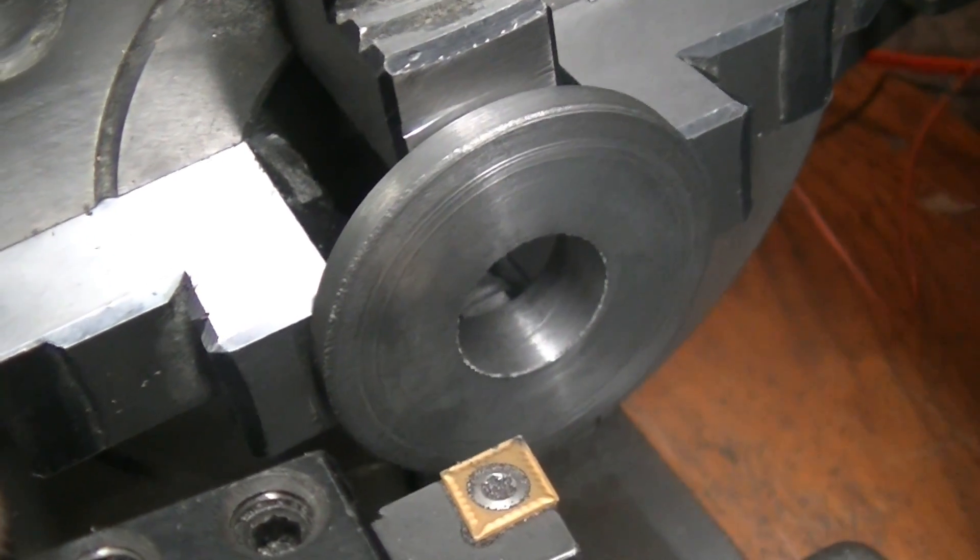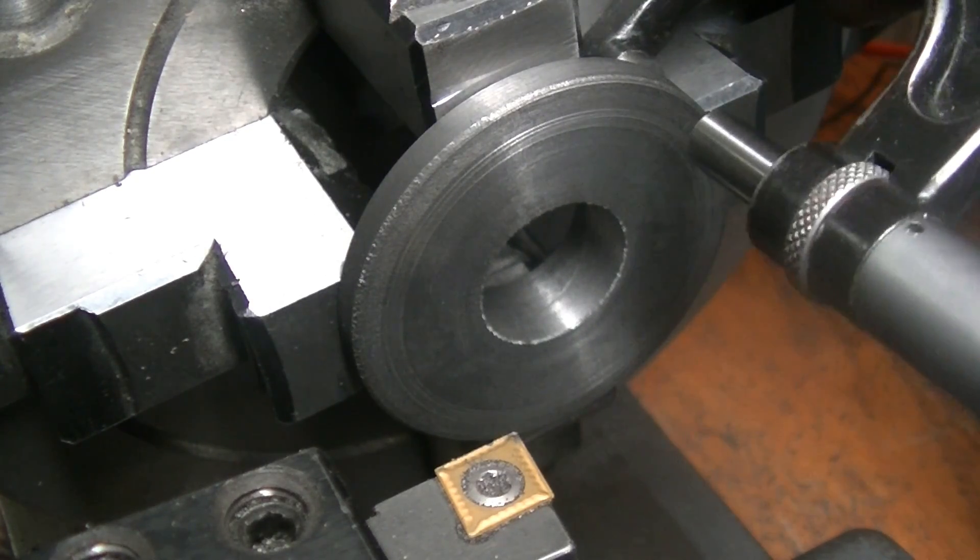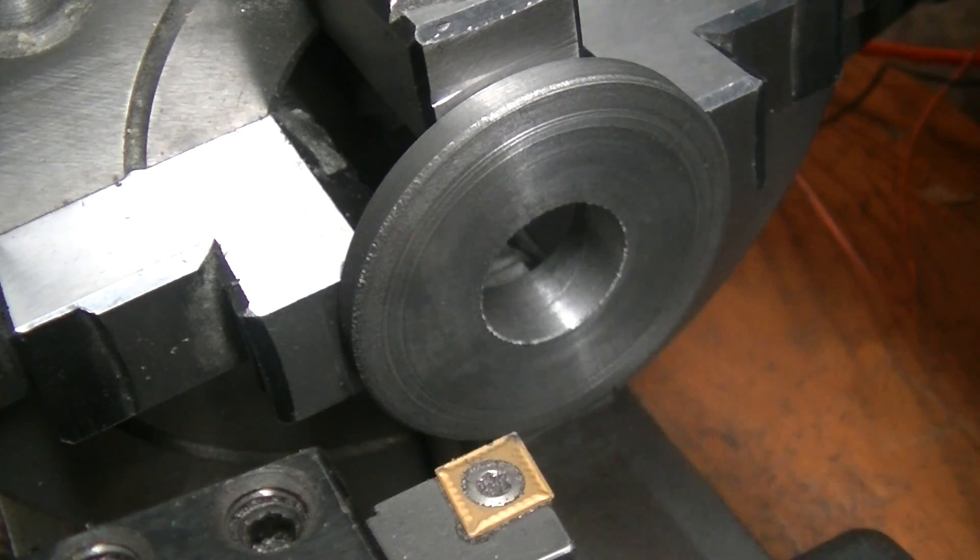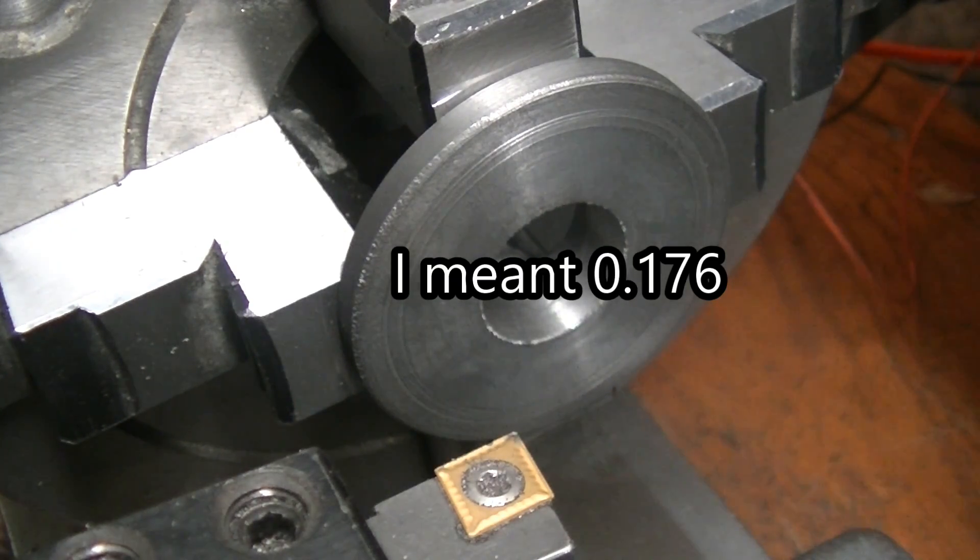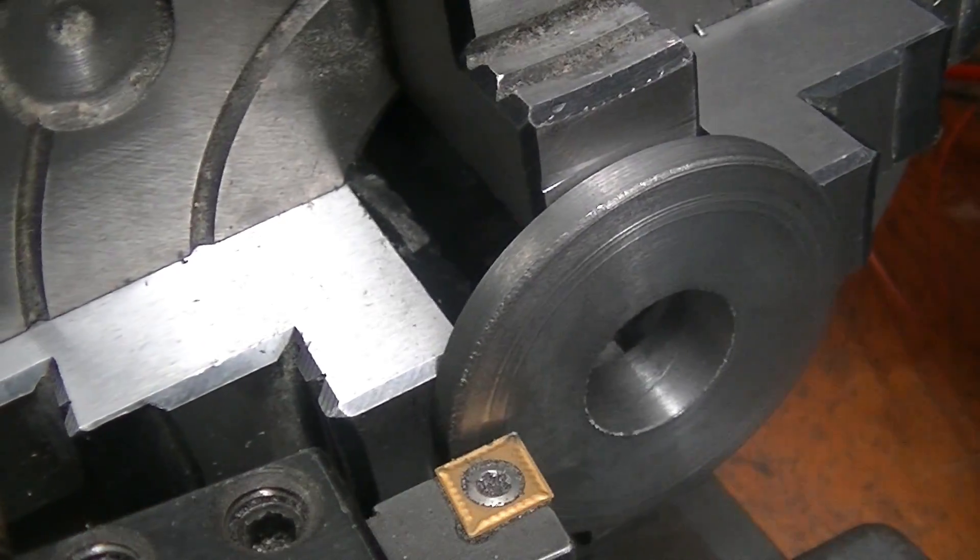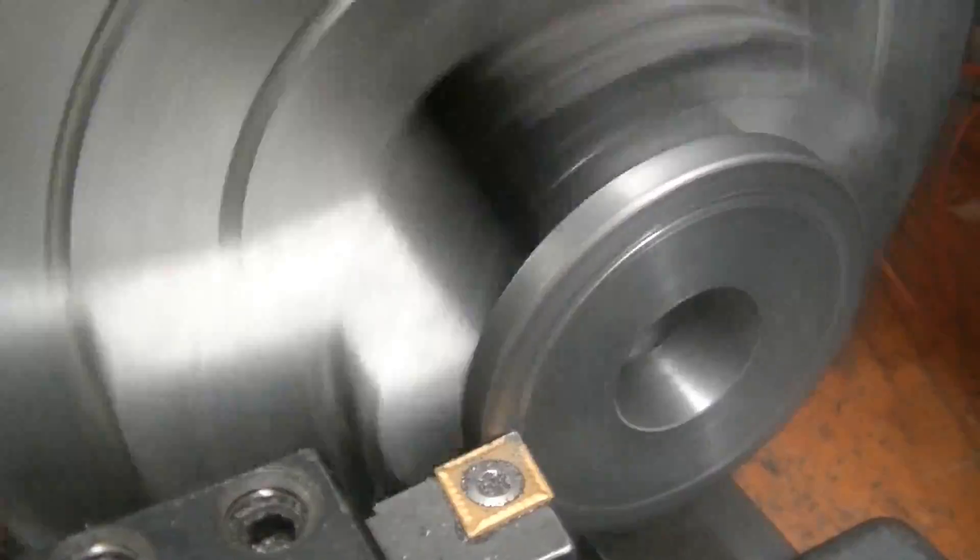Okay, I got it flipped over, indicated in. So let's see here. It's supposed to be an eighth of an inch, so where are we at now? 1.76. Yep, so that's about 50 thou. Looks like we said it would be.